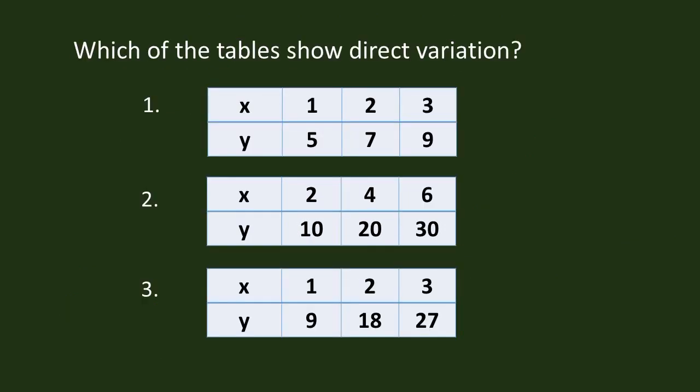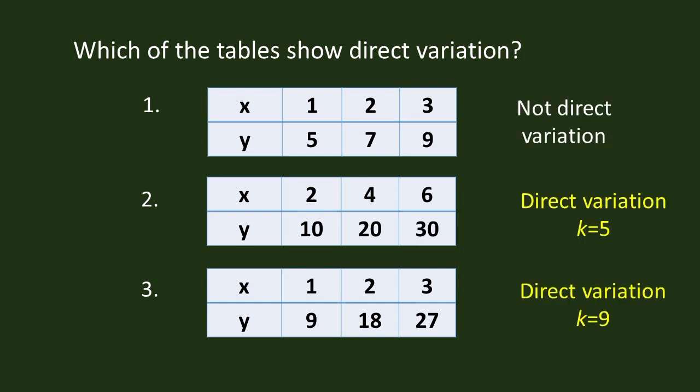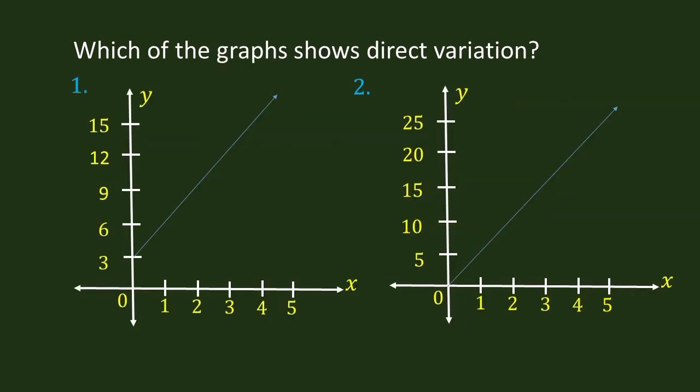Which of the following tables show direct variation? We can determine if the table shows direct variation if k is the same in every ordered pair. Which of the following graphs show direct variation? Again, we can only determine if the graph shows direct variation if, in every ordered pair, we have equal values of k.